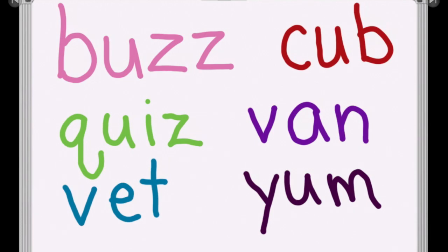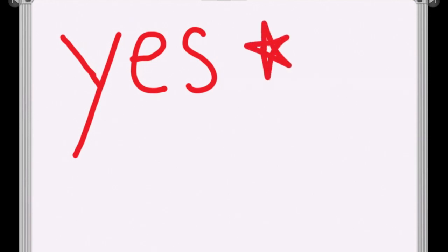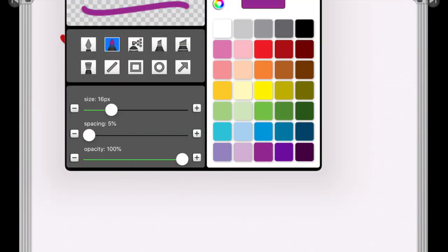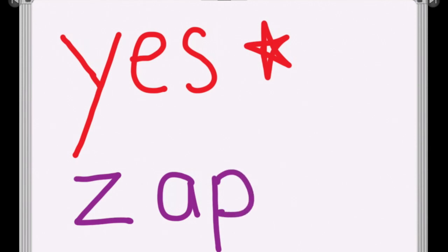Now the last two, I want you to write all on your own and then check with mine. The first one is 'yes.' You wrote Y-E-S. Good job. Next one, write the word 'zap.' Check your word: Z... A... P. Super Toss Star Speller!